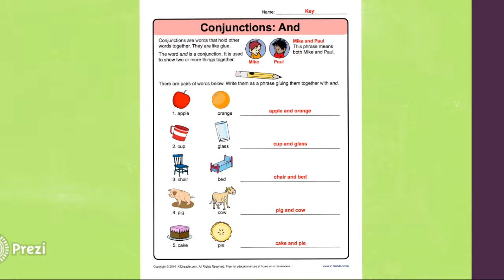Now for number five, cake, pie. You would say cake and pie. So basically, and glues these two subjects together. And also notice that all of these two pairs are similar subjects. So for example, apple and orange are both foods, cup and glass are both utensils, and so on.